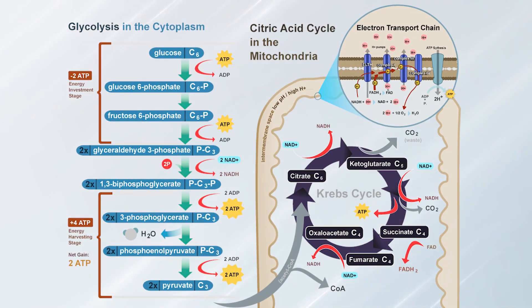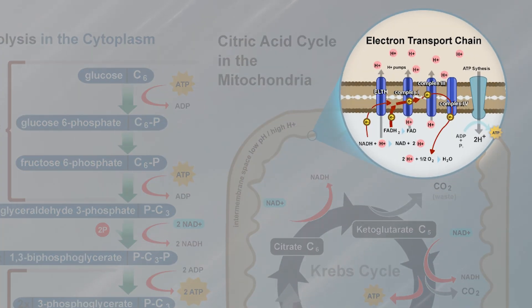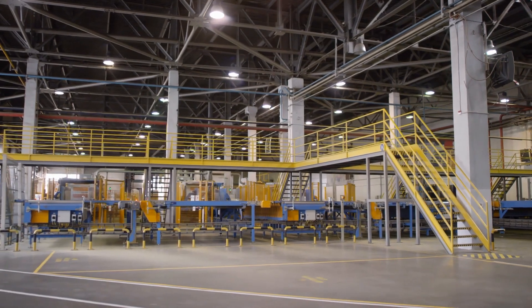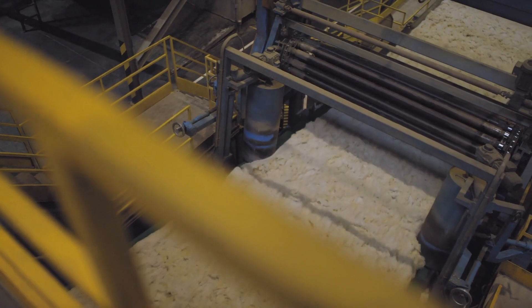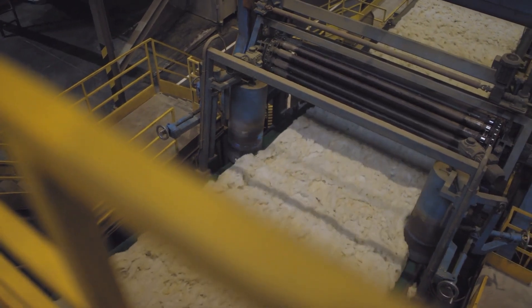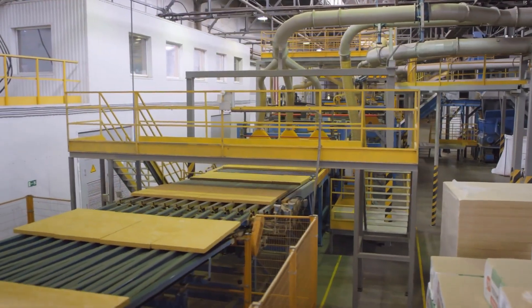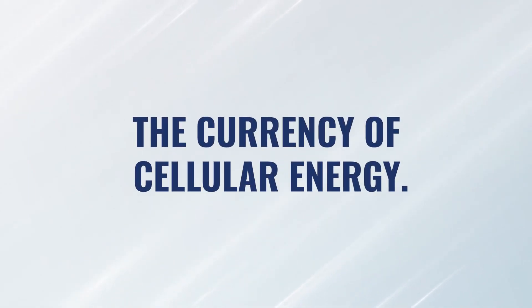The electron transport chain is literally the last few steps of energy production in our cells — picture it as a factory. As a factory, you need to deliver raw materials and then process those raw materials in order to make a product. And in this case, the product is ATP, which is the currency of cellular energy. It's what cells need to do all the different jobs that cells are required to do.